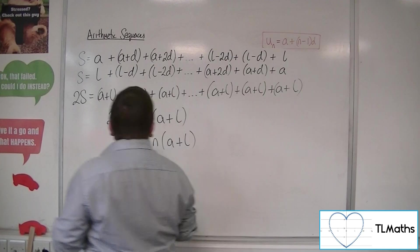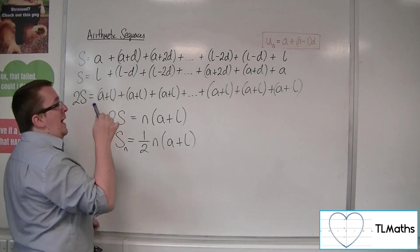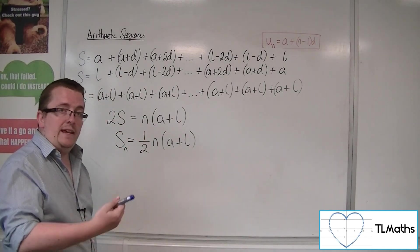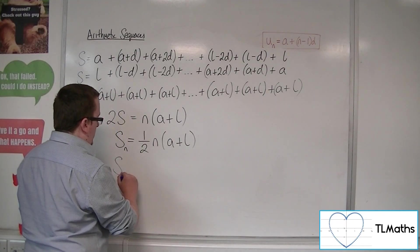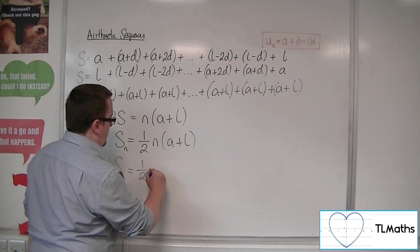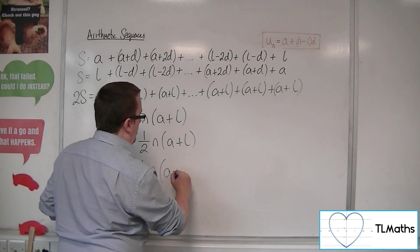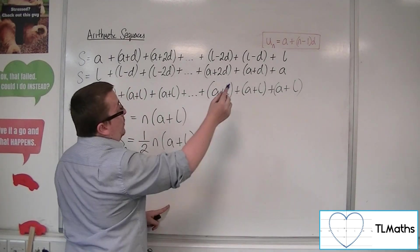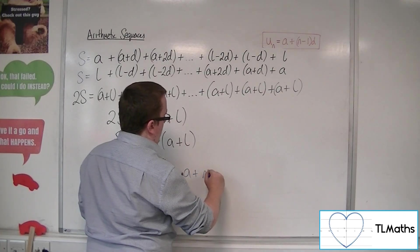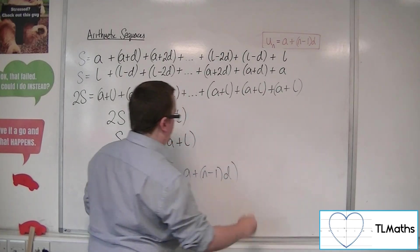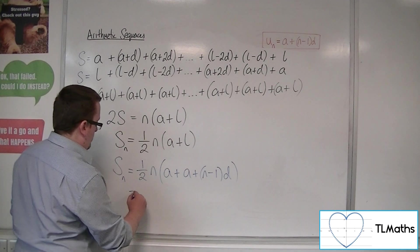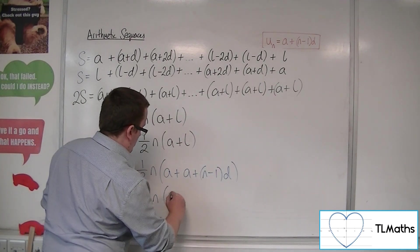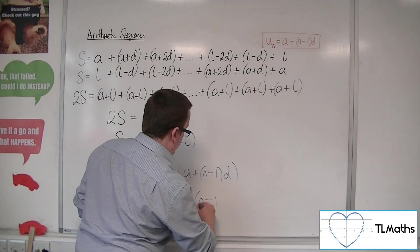So I can replace the l with a + (n - 1)d, because that is what l is. So you can also write that Sₙ is 1/2 n(a + a + (n - 1)d). So you now have 2a + (n - 1)d.